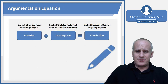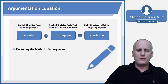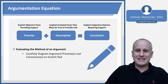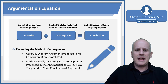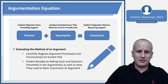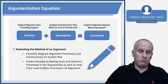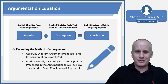Now we consider the other type of evaluate argument task: evaluating the method of an argument. For these questions, you need to carefully diagram your premises and conclusions on your scratch pad, literally articulating what the pieces are and how they fit into the equation. You're only going to predict broadly by noting facts and opinions as presented, and how they lead to the main conclusion. You won't predict exactly what the answer will say, but find an answer matching your notes about which parts are premise, which are conclusion, and how they interact.